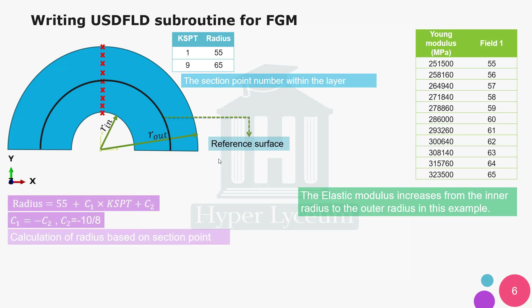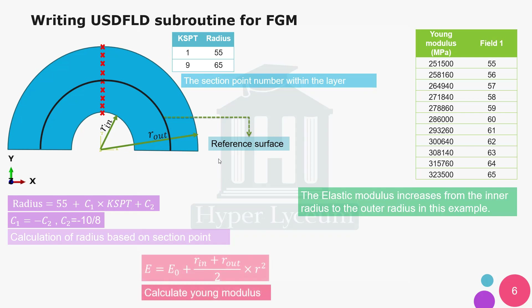To determine c1 and c2, input the inner radius which is 55 and the outer radius which is 65 into the formula. As a result a system of linear equations is constructed. By solving it, the coefficients c1 and c2 are found. At the bottom of the screen you can see the Young's modulus which is a function of radius.